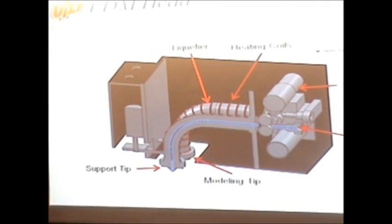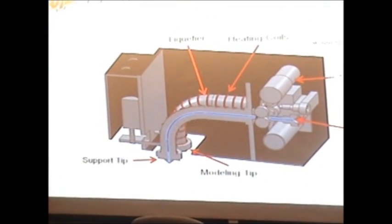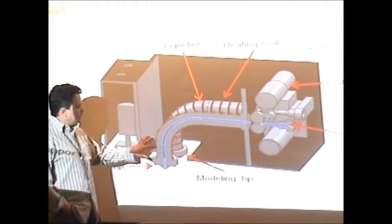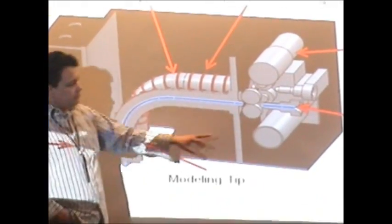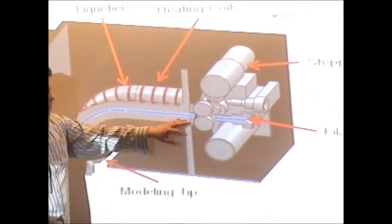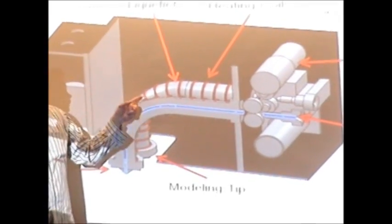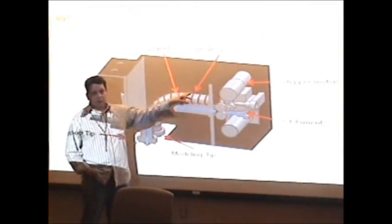We start looking at the heads guys, which is the FDM head, in more detail. Here you have the FDM head of the FDM 3000. You have the filament, where the filament goes. You have the liquefiers guys, as you can see here, the liquefiers, with the heating coils that heat up.